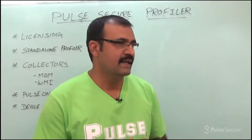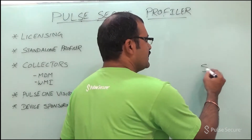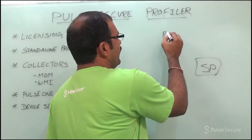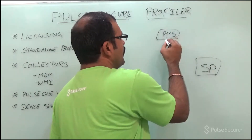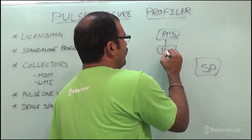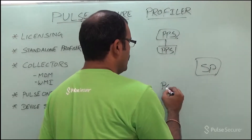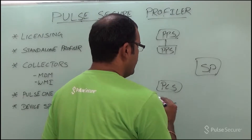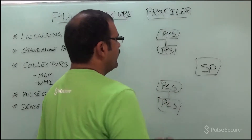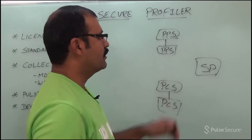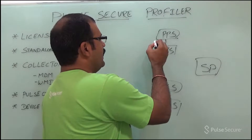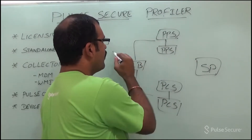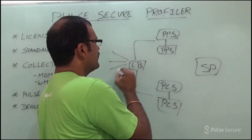What it means is, standalone Profiler can be deployed in an active-active cluster where Policy Secure or Connect Secure will be deployed in an active-active cluster or unclustered behind a load balancer where all devices are connecting.